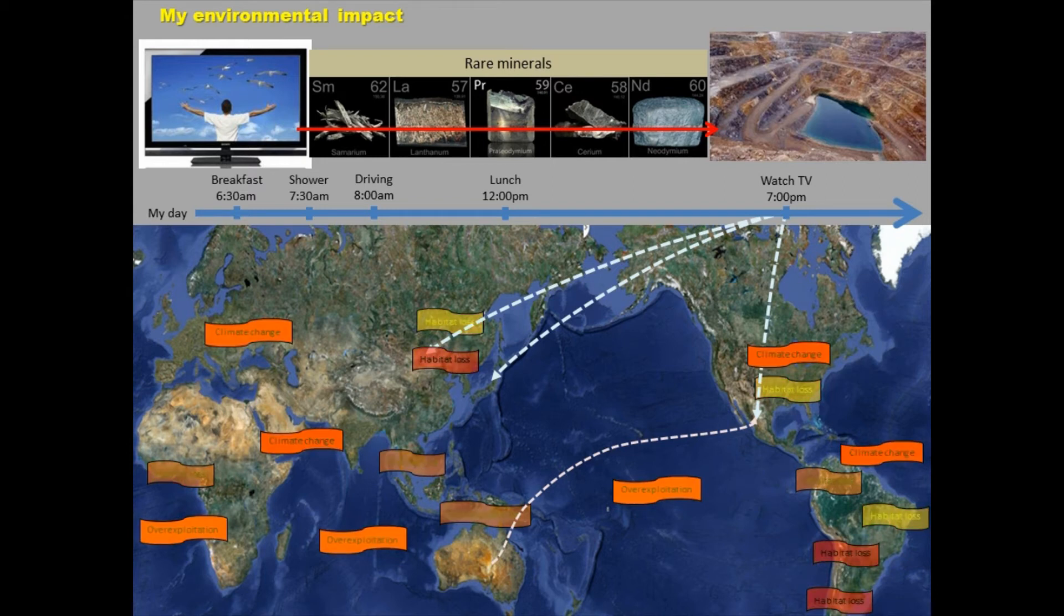However, the rare elements are found in Australia, so those rare elements had to be transported to Mexico, to Japan, and China. Once the TVs are done, they had to be transported to my place. And that means that these products, these TVs had to be transported from Japan, Mexico or China to the place where I live.